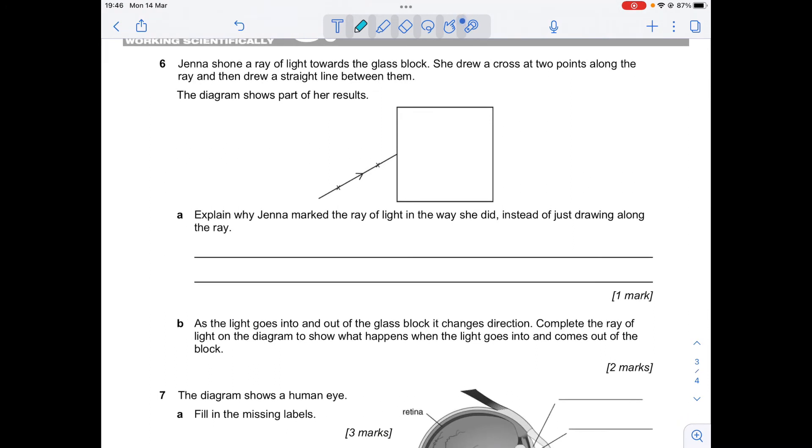All right, number six. Jenna shone a ray of light towards the glass block. She drew a cross at two points along the ray and then drew a straight line between them. The diagram shows part of her results. Explain why Jenna marked the ray of light in the way she did instead of just drawing along the ray.